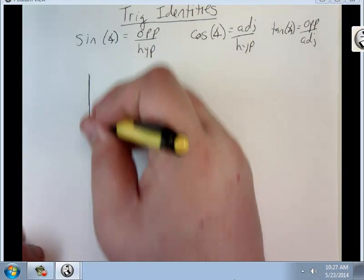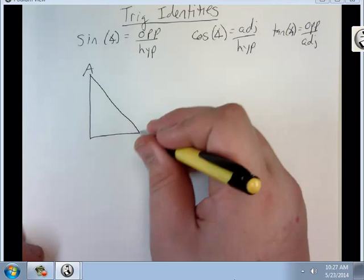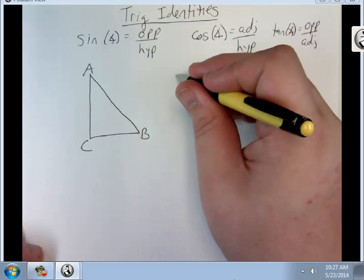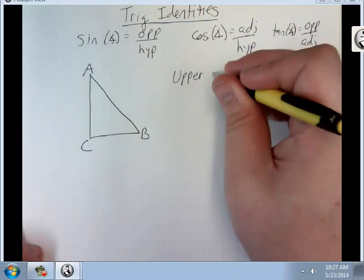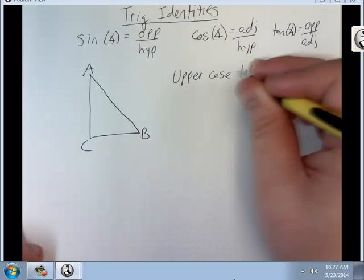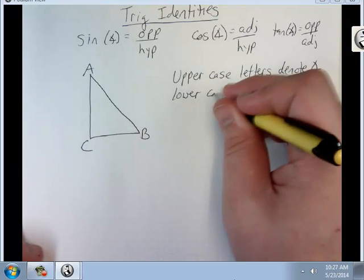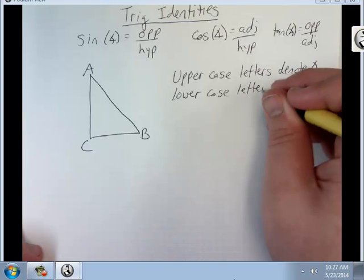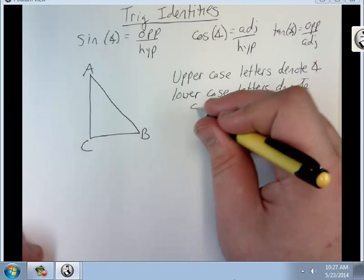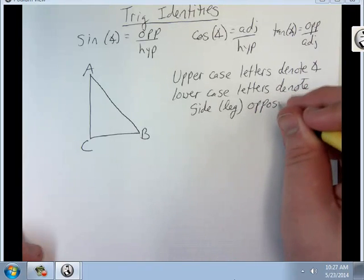So, we're given this triangle here, A, B, C. Uppercase letters denote angle. Lowercase letters denote side or leg opposite angle.